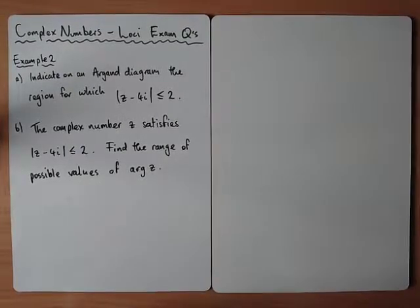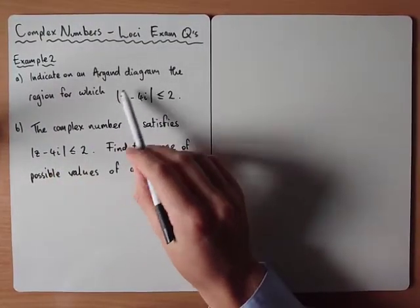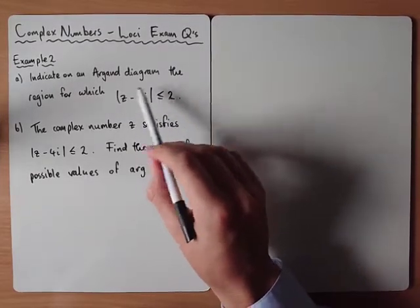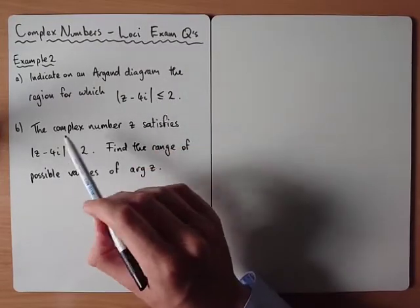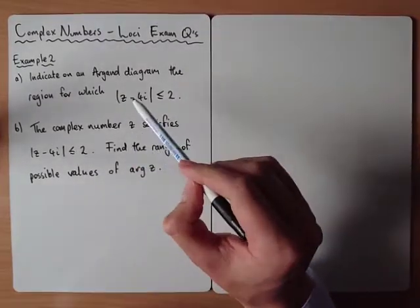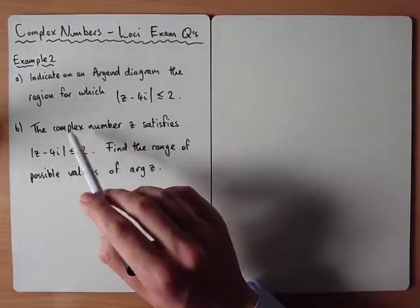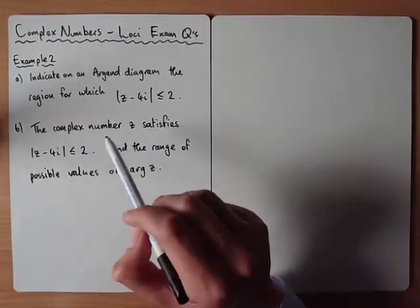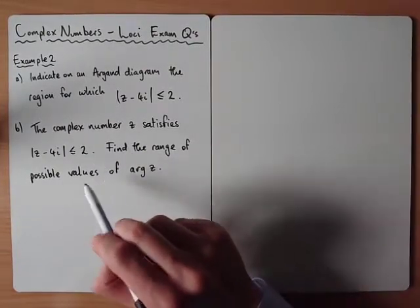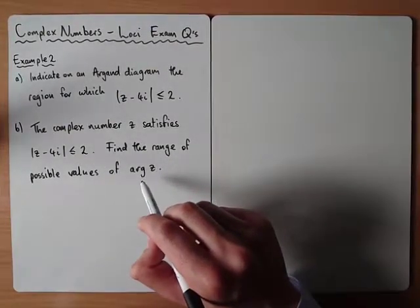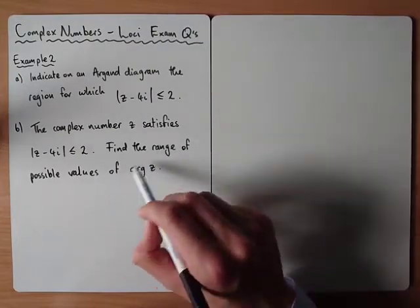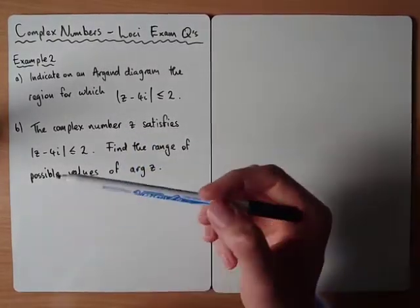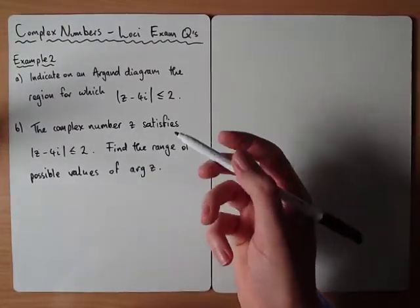Next example: indicate on the Argand diagram the region for which the modulus is less than or equal to 2, so we're going to get all the points inside the circle. Part B says a complex number Z satisfies this condition, meaning Z is inside or on the circle, and we aim to find the range of possible values for the argument of Z. This is a bit tricky to interpret at first, but these questions involve a little bit of geometry — basically right angle triangles and some Pythagoras and trigonometry.